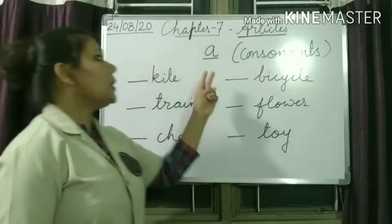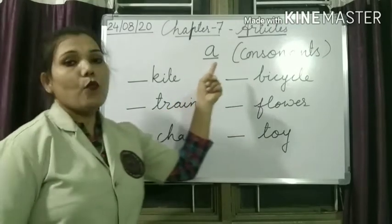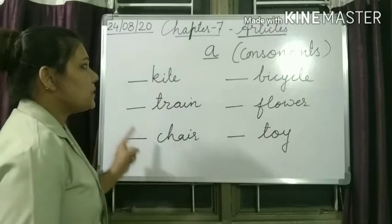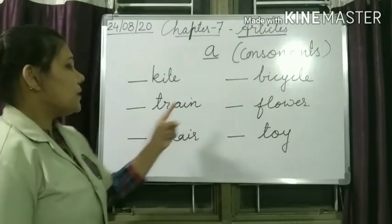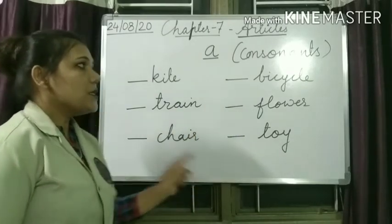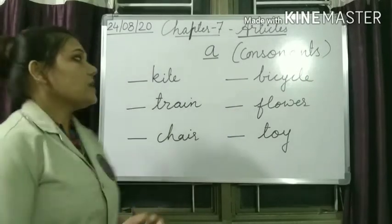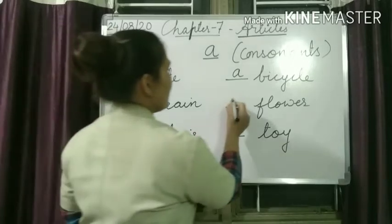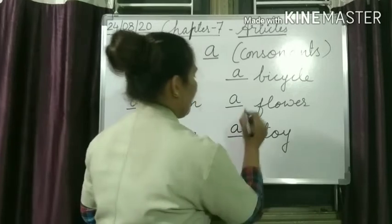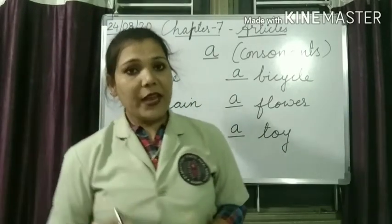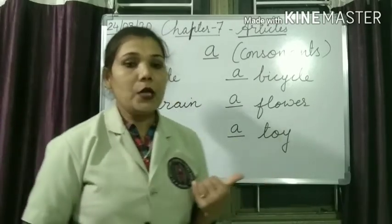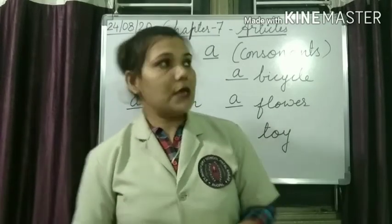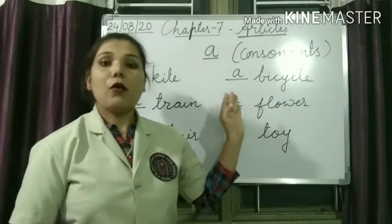Now let's see the usage of article A. We use article A when nouns are in singular form and begin with consonant sounds. Here are some examples: a kite, a bicycle, a train, a flower, a chair, a toy. All these nouns begin with consonant sounds, so we use article A for them.